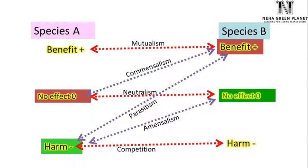So the main types of interaction are: mutualism, neutralism, competition, commensalism, parasitism, and amensalism. Out of these, if at least one species is benefited, then the interaction is also known as symbiosis or symbiotic.